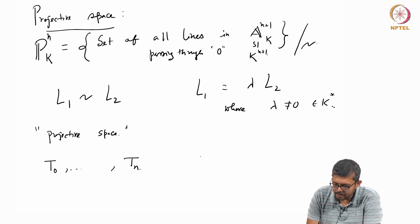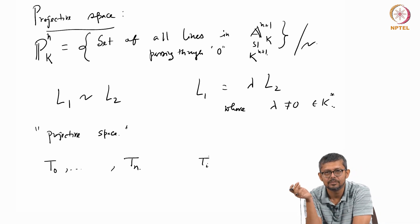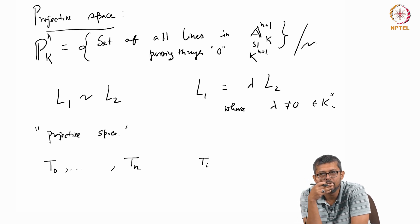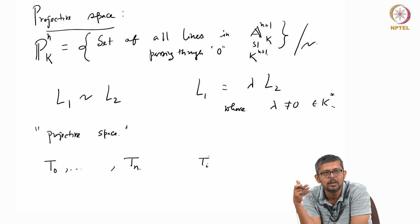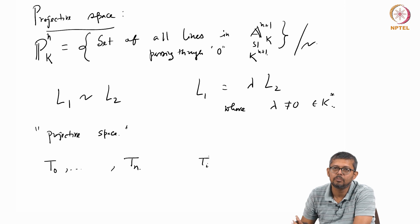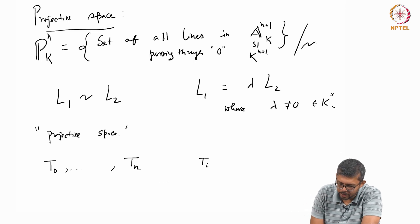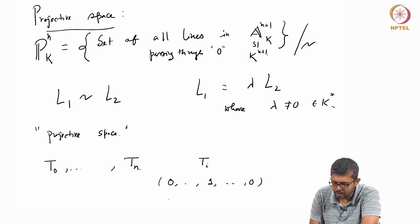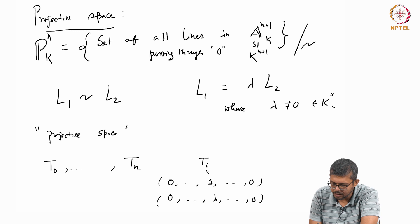Because, for example, these t_i's are not... generally coordinates, when you choose some coordinate, they are functions, right. That is how you construct function. If you remember that these coordinates give you functions, and all polynomial or all functions are some polynomial in these coordinates. But these t_i's are no longer a function on P^n_K. Because a point, for example, (0,0,1,0,...,0) and (0,0,lambda,0,...,0),